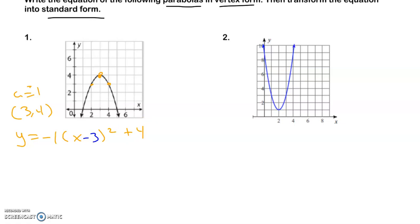Now, to get it translated into standard form, I know it's negative 1. It's x minus 3 once, x minus 3 twice, plus 4. Then I just use FOIL, and I do x squared minus 3x minus 3x plus 9 parentheses plus 4.